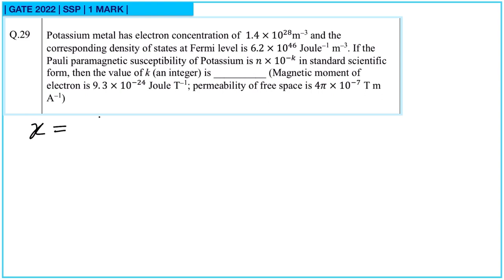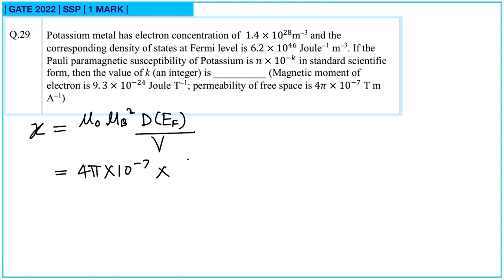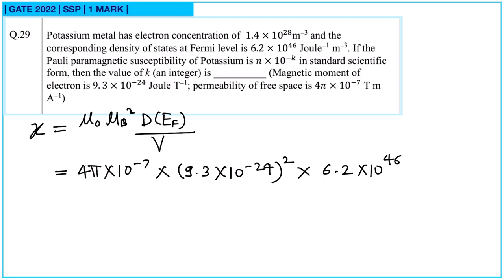The susceptibility can be written as chi = mu_0 × mu_B^2 × (density of states per unit volume). Here mu_0 = 4π×10^(-7), mu_B = 9.3×10^(-24), squared, multiplied by the density of states per unit volume which is 6.2×10^46. By multiplying these values, we get 6.739×10^(-6). Comparing with the standard form, k is equal to 6. So the answer for this question is k = 6.